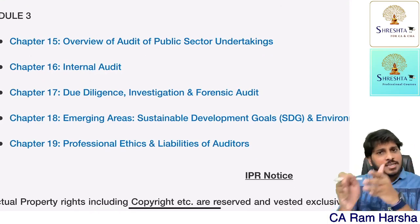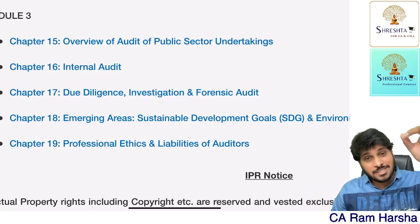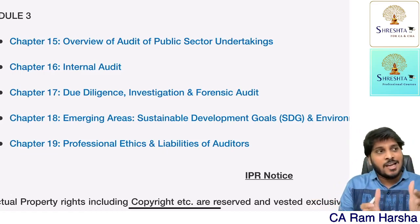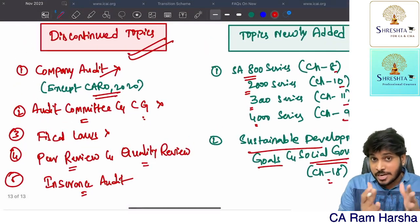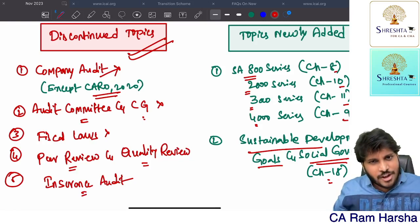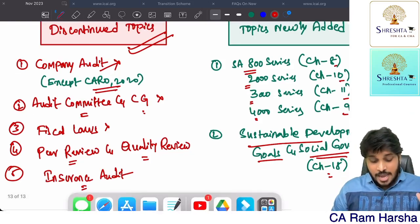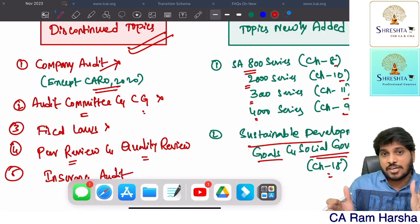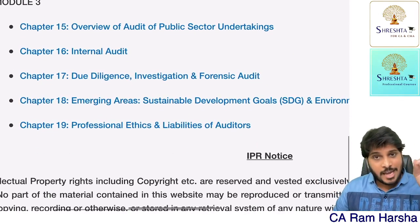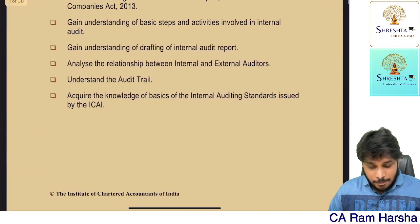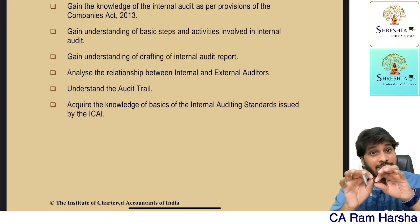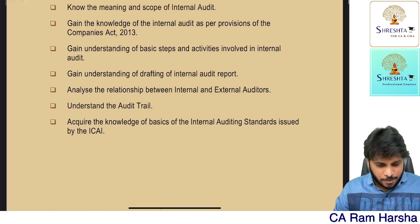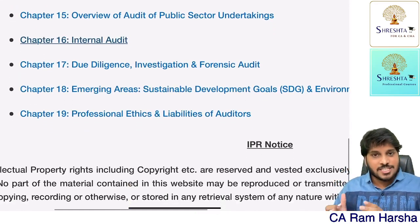Whatever syllabus is carried forward from the existing scheme, the content is exactly the same — ditto, even the examples and illustrations are the same. So technically, whoever is already enrolled for May 2024 auditing classes with me or with anybody else and is already reading the book — except for the topics I mentioned that are removed in the new scheme, ignore those. All other chapters, all other video lectures, all other material content is exactly the same. Regarding internal audit in the new scheme, they have not covered management audit and operational audit, which means those topics are removed — so in internal audit there is only a partial change.